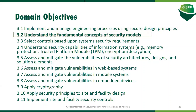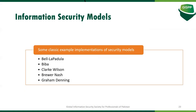Now we'll see a few security model concepts. When implementing any system, you will have to follow one of these security models. Some classic examples are Bell-LaPadula, Biba, Clark-Wilson, Brewer-Nash, and Graham-Denning. The purpose of any information security model is to ensure the system provides security using certain rules provided by the security model.